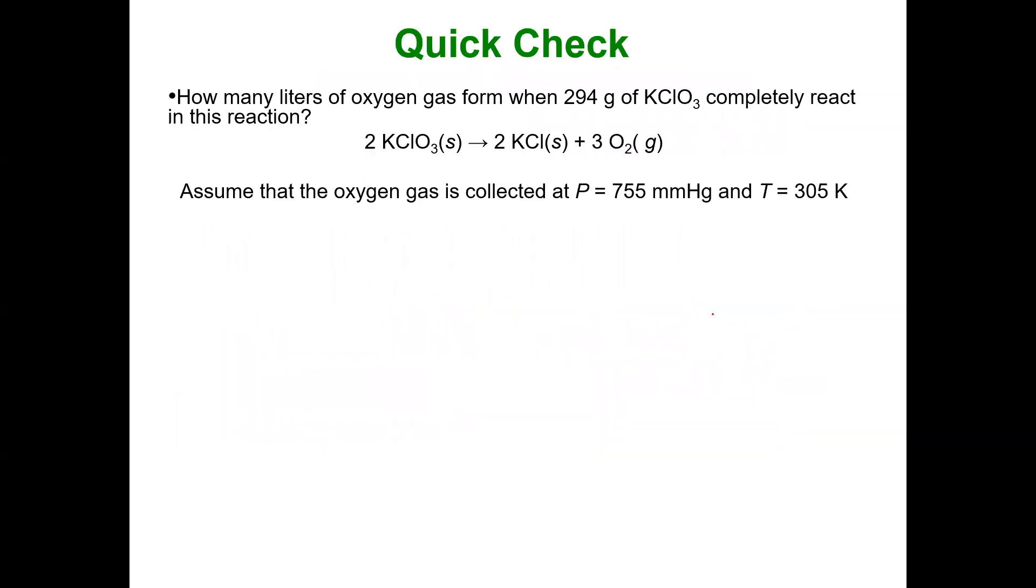So here's an example of a stoichiometric calculation involving a gas under non-STP conditions. So how many liters of oxygen gas, so we know it's gas, they're asking for a quantity, form when 294 grams of potassium chlorate completely react in this reaction.